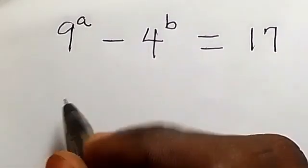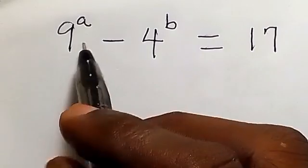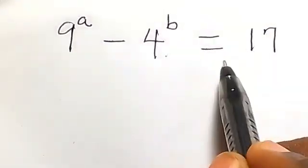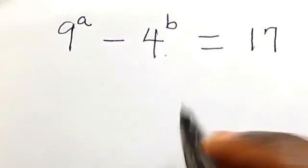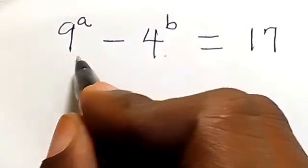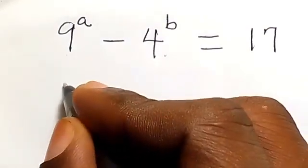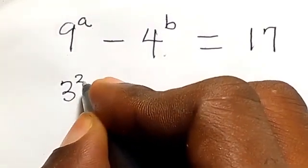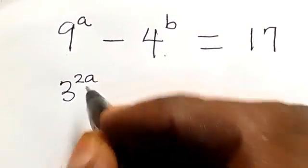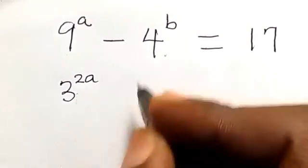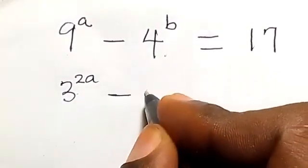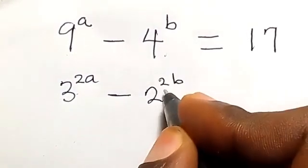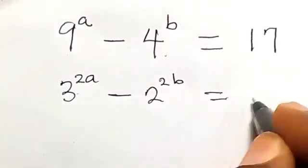We have 9 raised to power a minus 4 raised to power b equals to 17. We can write this another way: 3 raised to power 2 times a, since 3 squared is 9, minus 2 raised to power 2 times b, since 2 squared is 4, then equals to 17.